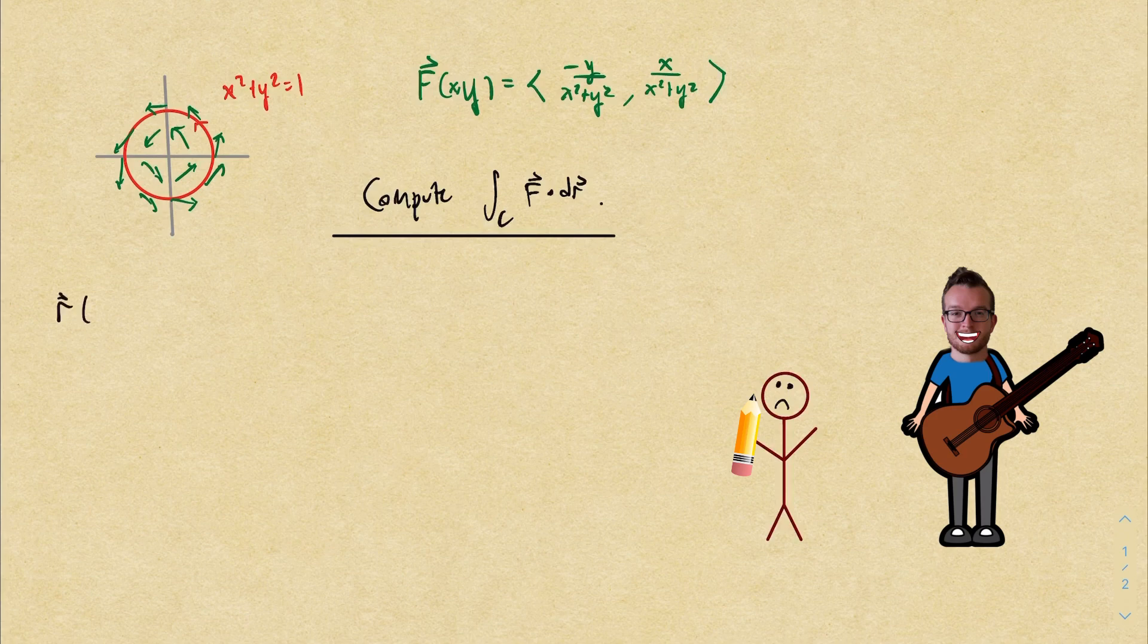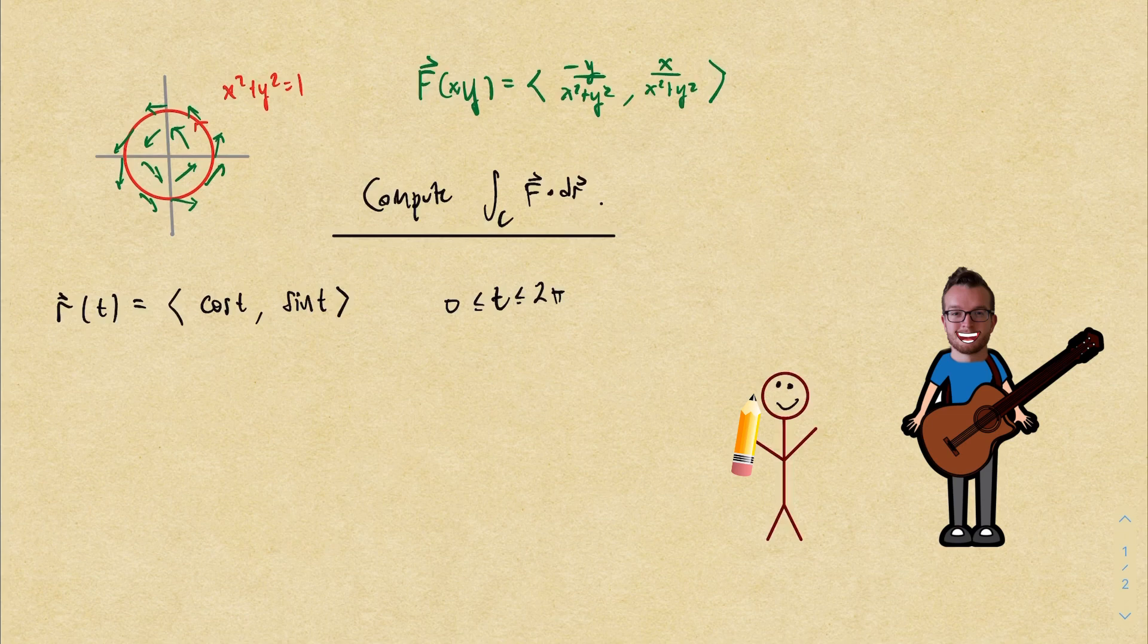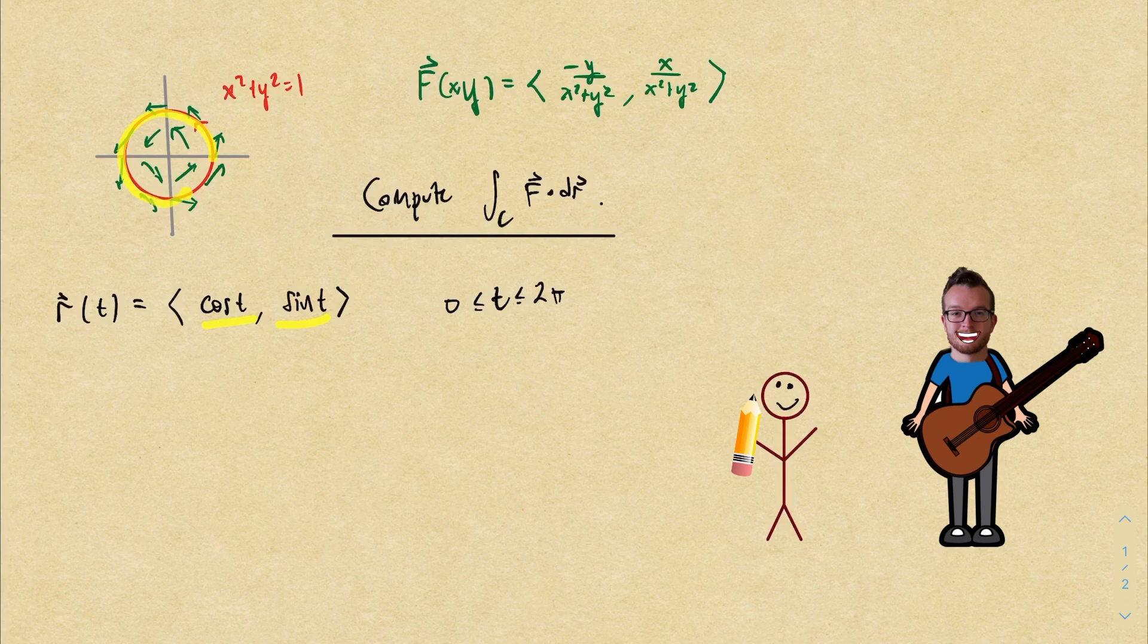Take the curve, parameterize. Don't feel bad if it takes three tries. Make sure that you pick a T domain. Before you go and compute r prime, pump the brakes and take some time to check the orientation is the same.